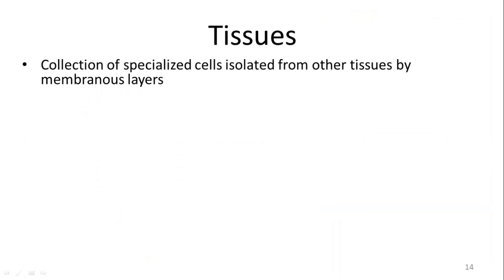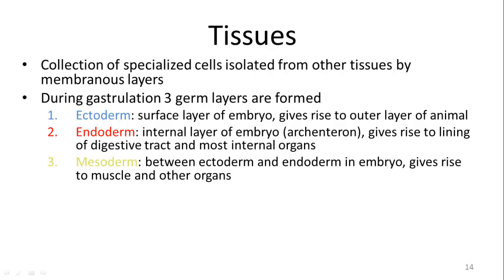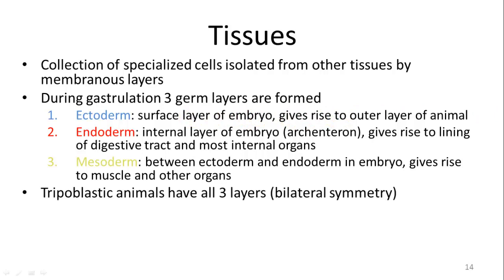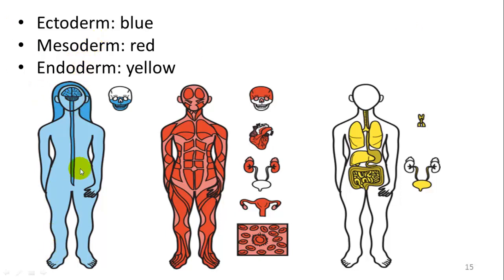Tissues are very important to the diversification of animals. Tissues are collections of specialized cells isolated from other tissues by membranous layers, generally performing the same specialized function. During gastrulation, three germ layers form: the ectoderm, endoderm, and mesoderm. The mesoderm develops between the other two and gives rise to muscle and other organs. The endoderm gives rise to the digestive tract and most internal organs. The ectoderm gives rise to the outer layer such as skin. Triploblastic animals have all three layers and are generally bilaterally symmetrical. Diploblastic animals have only ectoderm and endoderm and have radial symmetry.